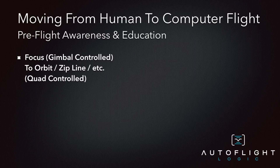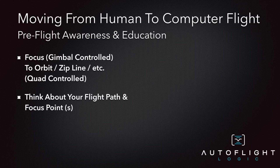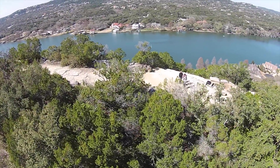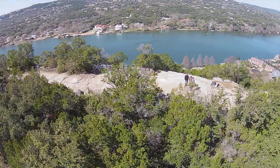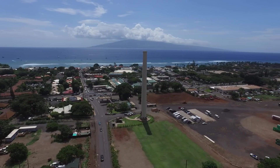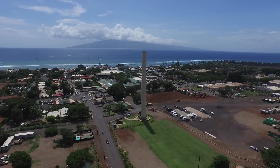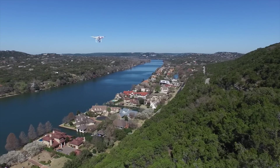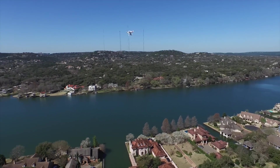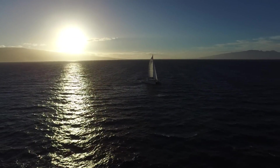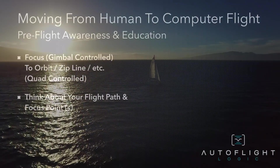I recommend that before you even start up your quadcopter or transmitter, you first think about what you're trying to accomplish. This typically means thinking about the quadcopter's path and the focus of the camera. Specific to orbit, this means: 1. What are you going to rotate around and what is the center point? 2. What is the radius of the circle or orbit you're trying to accomplish? 3. What altitude do you want to be at when rotating? 4. What are you focusing on — is it moving or is it stationary?